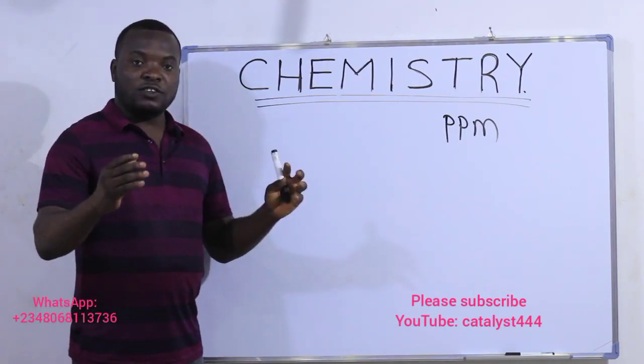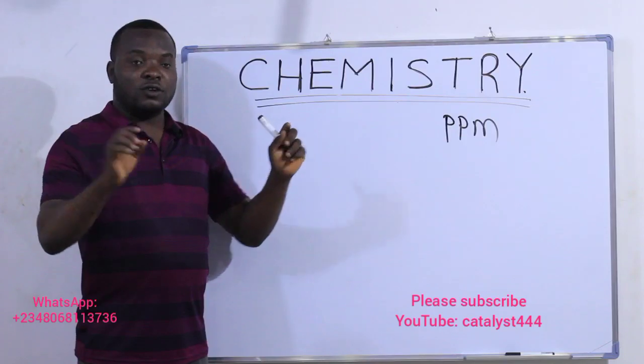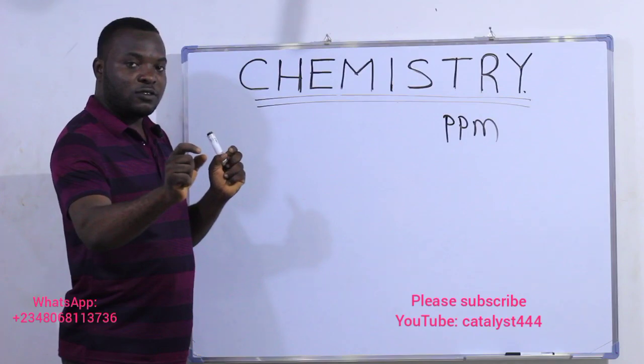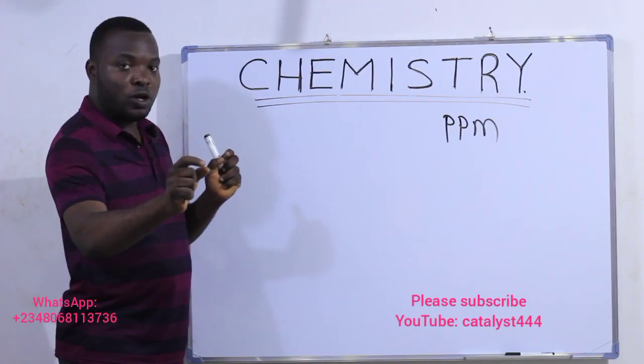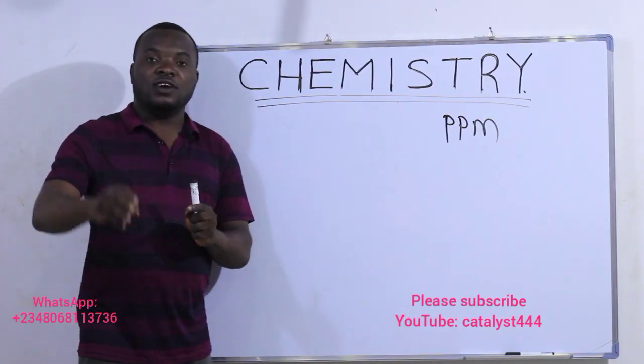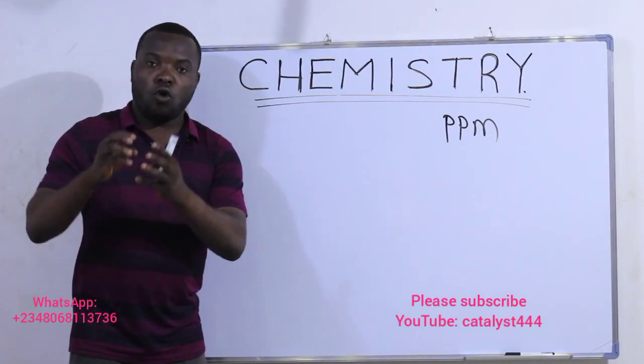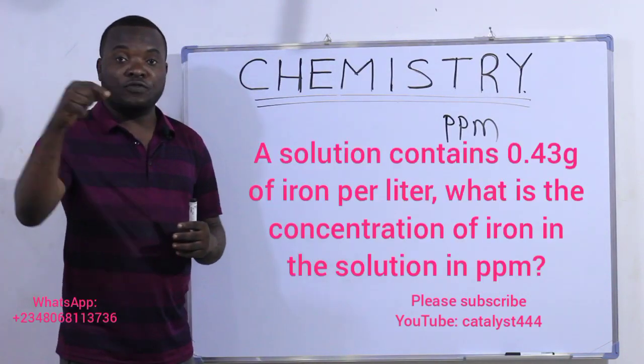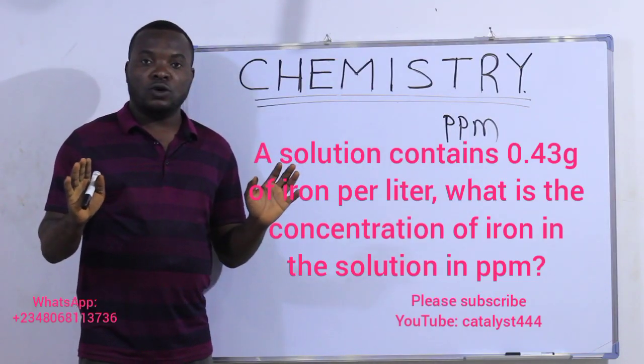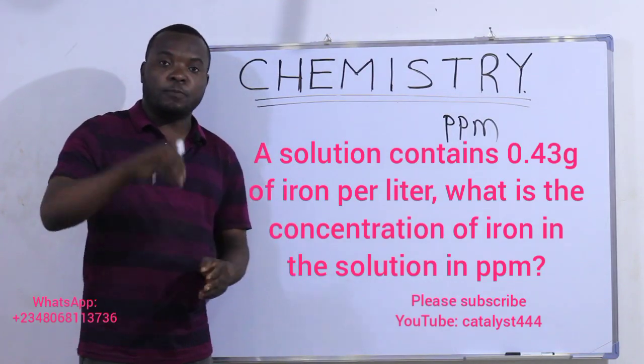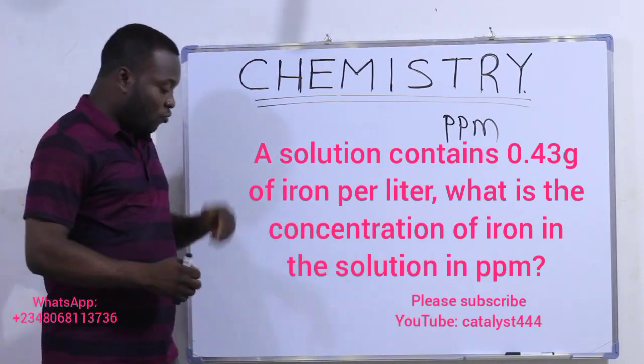When you do this, you can now tell a certain mass is contained in a certain liter volume. If you can find the number of milligrams of that substance contained in one liter volume of the solution, that is your PPM. Which means, PPM simply means the number of milligrams of a substance present in one liter of solution.